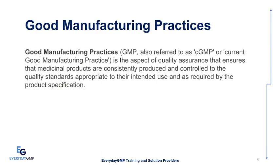Good Manufacturing Practices, GMP, also referred to as CGMP or Current Good Manufacturing Practice, is the aspect of quality assurance that ensures that medicinal products are consistently produced and controlled to the quality standards appropriate to their intended use and as required by the product specification.